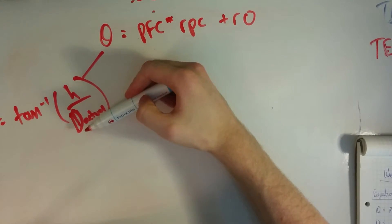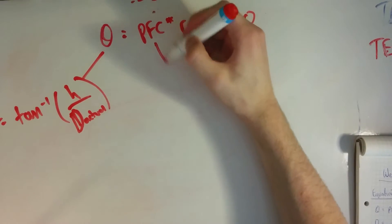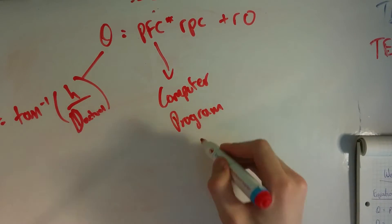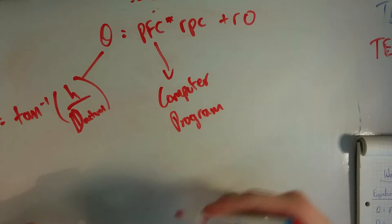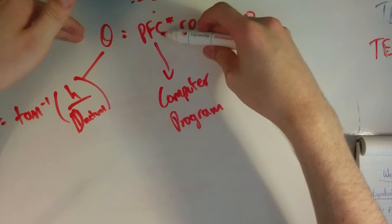And then pfc we get that from our computer program for each value of d, because we were getting the measuring tape stepping back. So we have this relationship, these two values of theta and pfc.